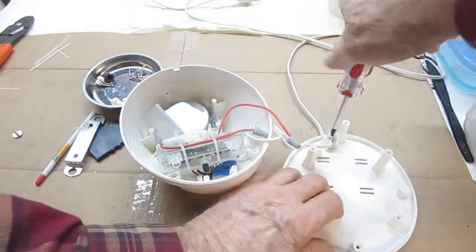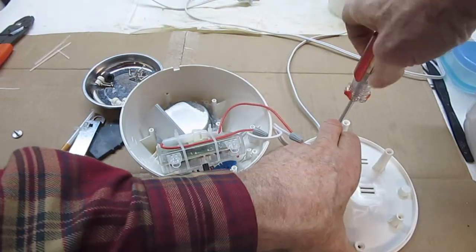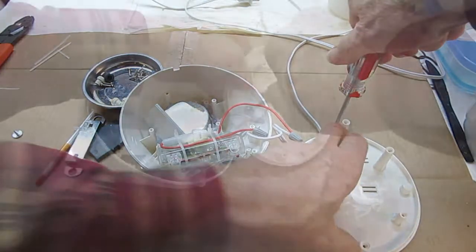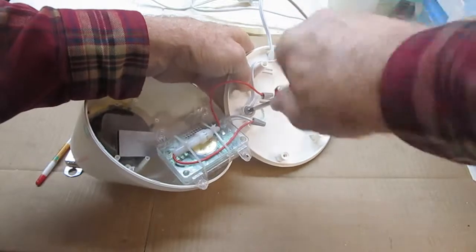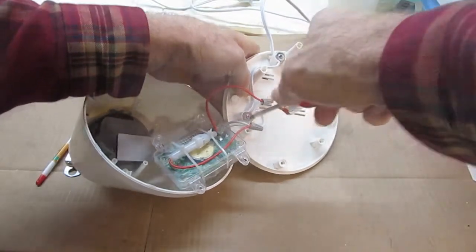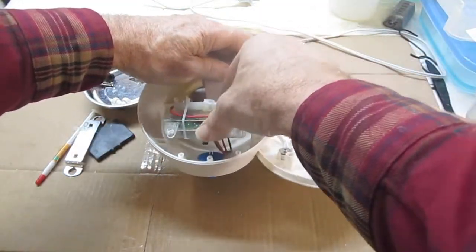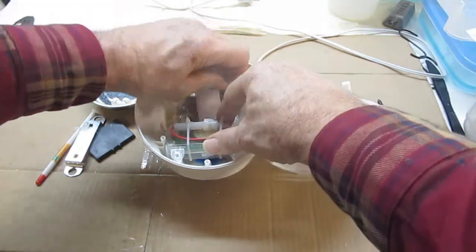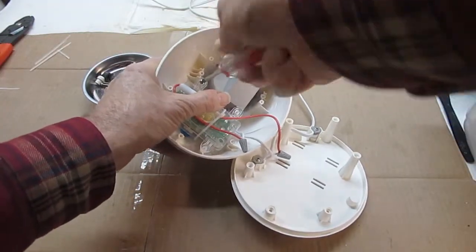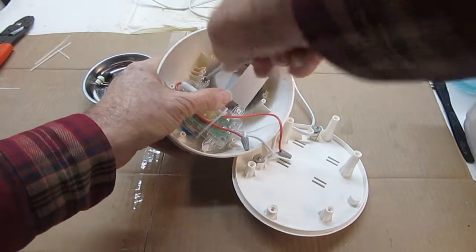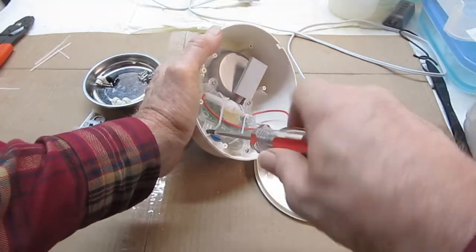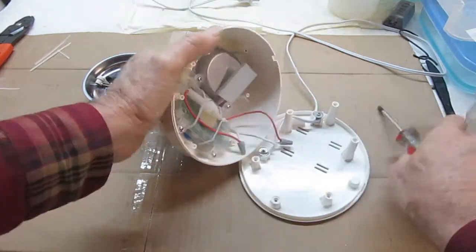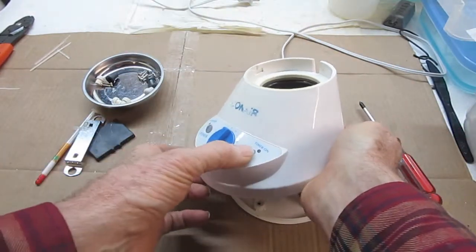Fasten the power cord to the base with the two washer head screws. Reattach the circuit board enclosure with four screws.